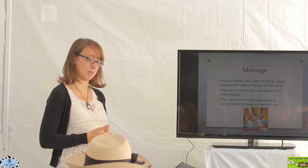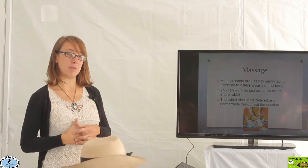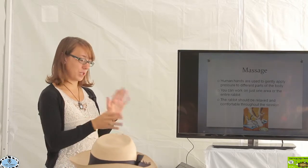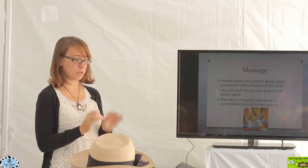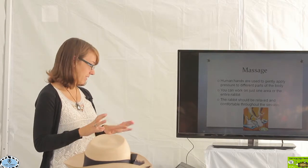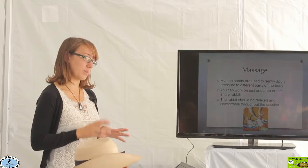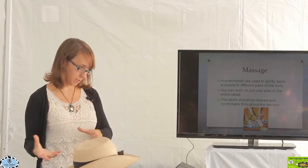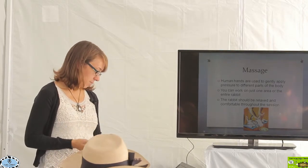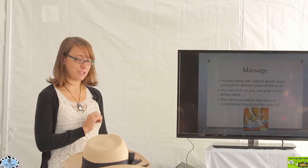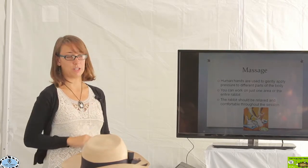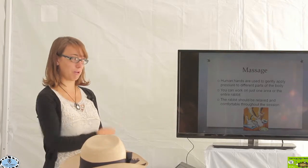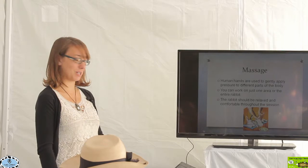I'll briefly talk about massage and give just a couple of examples of massage things that can be done for rabbits. So what massage is is we're using our hands to apply gentle pressure to different muscles and different joints, different parts of the body and you can work on just one area or you can work on multiple areas in the animal. You should have an animal that is nice and relaxed when we are doing massage with them, kind of like that rabbit in that little cartoon there seems very relaxed. That's what we want all of our rabbits to look like when we're giving massages.